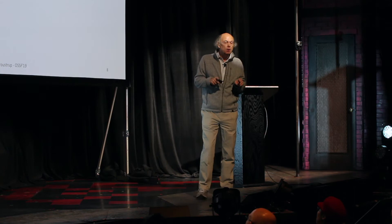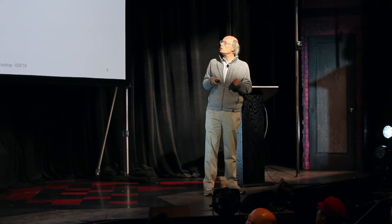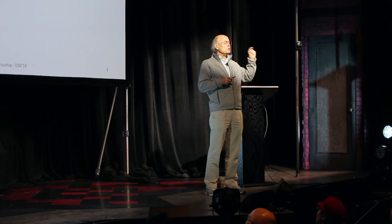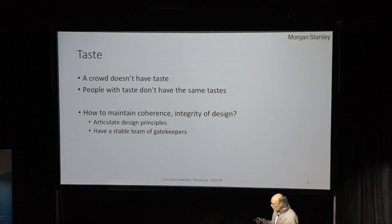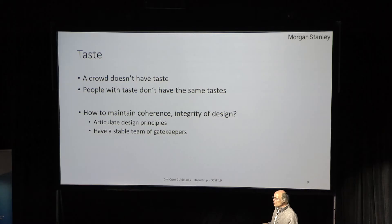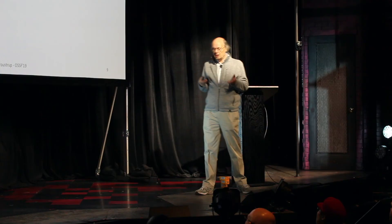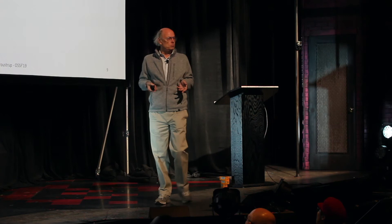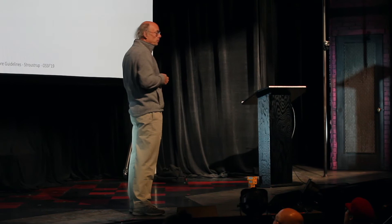Everything we do is under MIT license, and there are about 262 contributors. It's a very small number in the open source community, but this is a small and unusual project. One problem we have is that with guidelines, taste is really important — there's no science to what code should look like. When you want to say to people 'this is what you should try and do,' we need taste. And people with taste don't have the same taste. So how do you maintain coherence and integrity of design? For that, you need to articulate principles. And we have to have a stable team of gatekeepers that approve the pull requests.